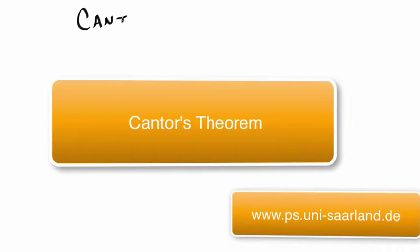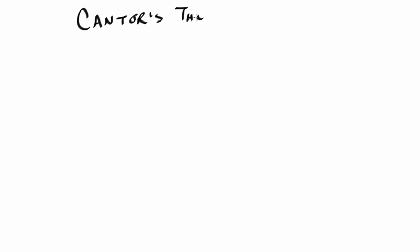In this video we'll be proving a result known as Cantor's Theorem. Cantor's Theorem states that there is no surjective function from a type X onto a type X to Prop. So we write this out. There is no function f from X to X to Prop such that f is surjective.